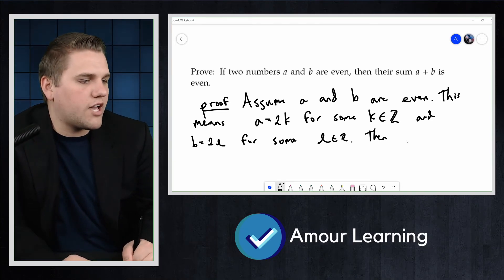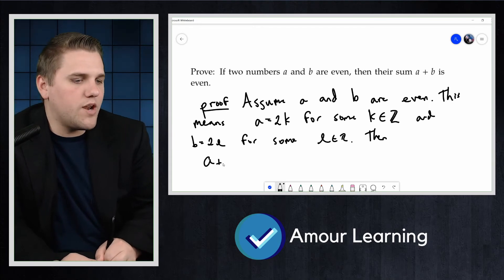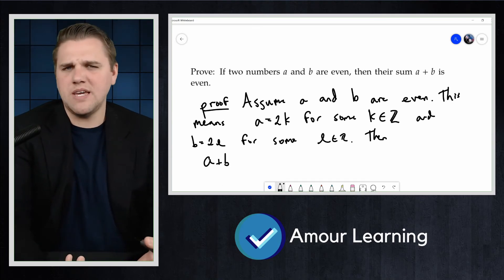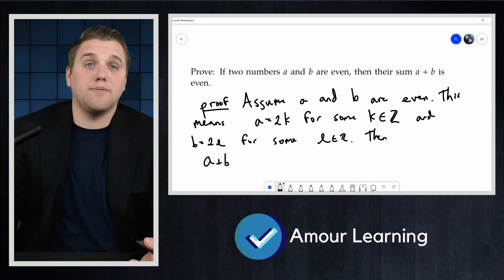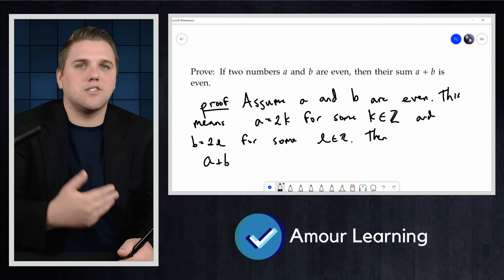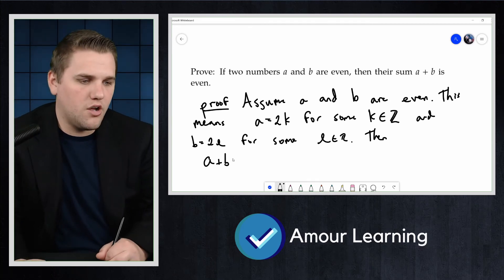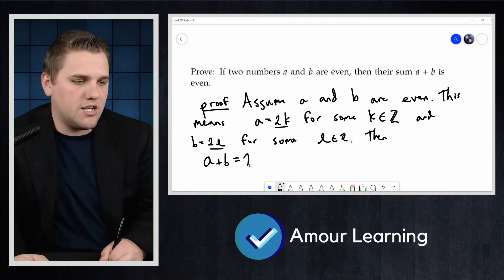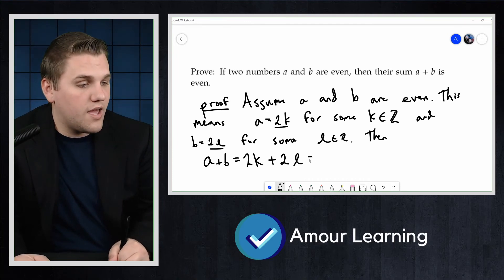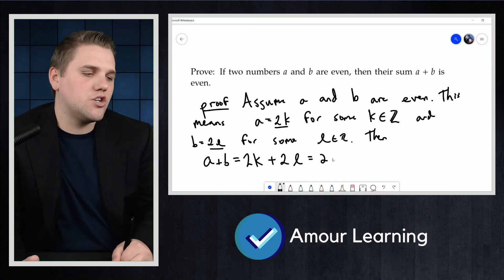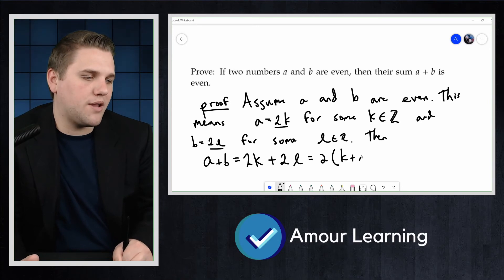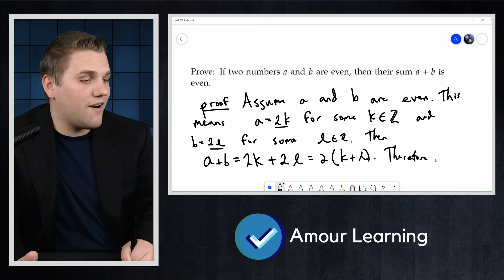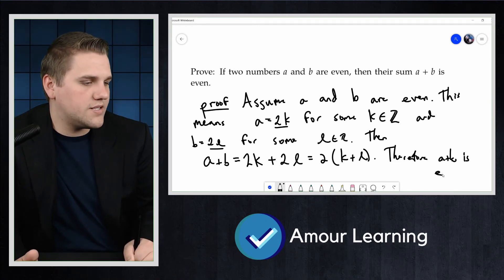So let's take a look at A plus B. How do we know it's even? Well, what does it mean to be even? That means it's two times an integer. So we need to show that A plus B is two times some integer. Well, we know what A and B are. A is 2K and B is 2L. So A plus B is 2K plus 2L, and I can rewrite this as 2 times K plus L. Therefore, A plus B is even.